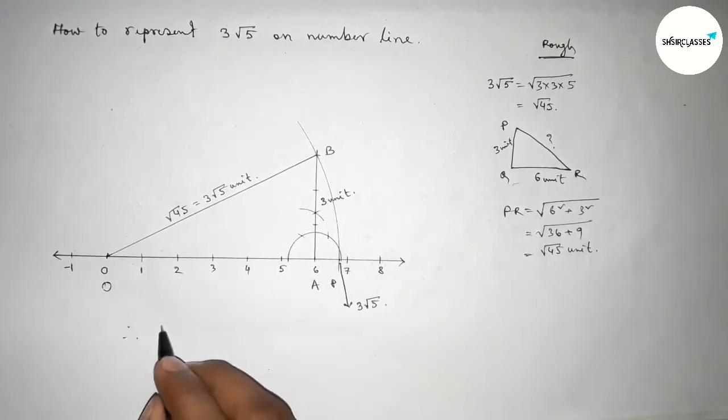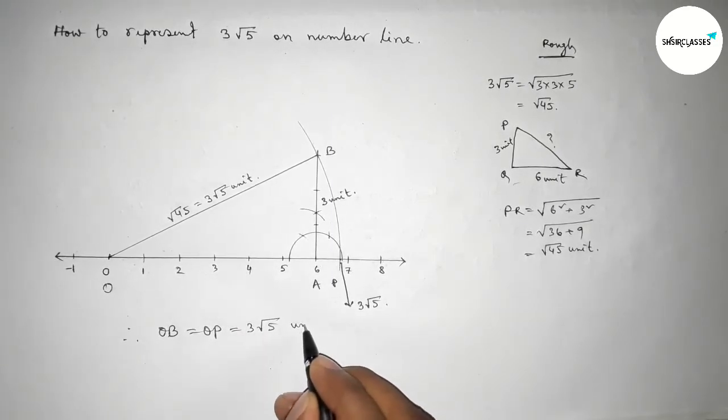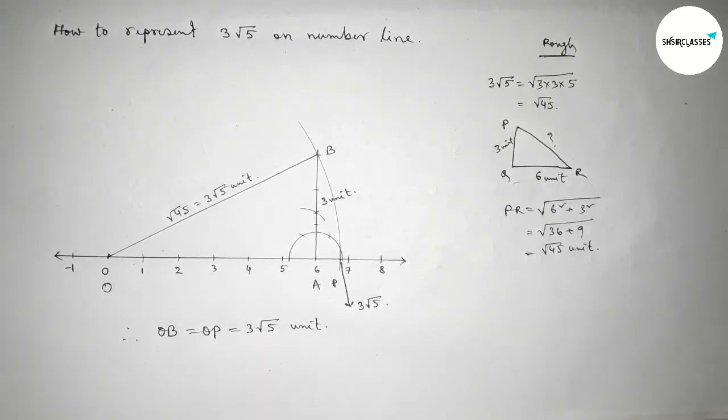Therefore, distance OB and OP equal to 3 root 5 unit. So that's all, thanks for watching. If this video is helpful, then please share it with your friends.